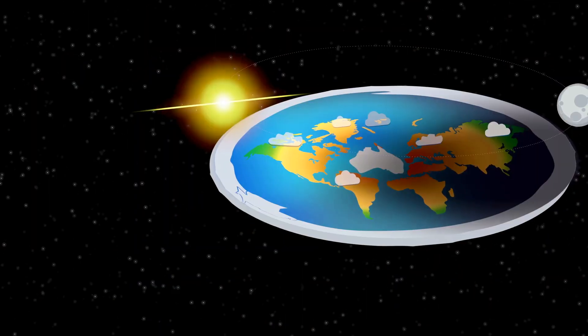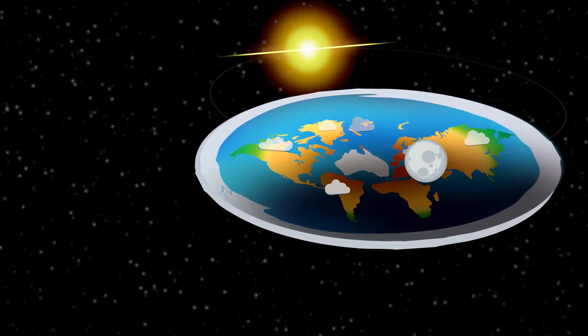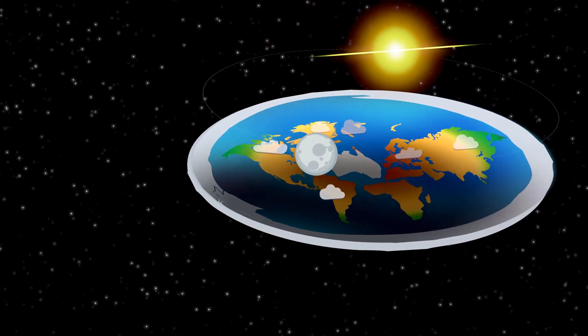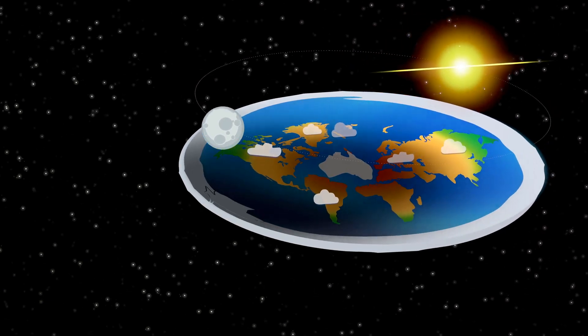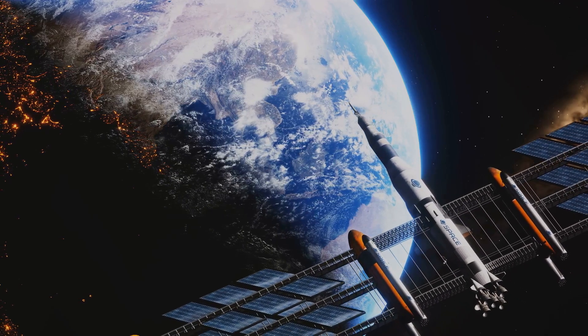Another common argument is the belief that if the Earth were truly spinning at over a thousand miles per hour, we would feel it. But we don't feel the Earth's rotation because we're moving with it at a constant speed. It's the same reason you don't feel the speed in a moving car, unless it accelerates or decelerates.